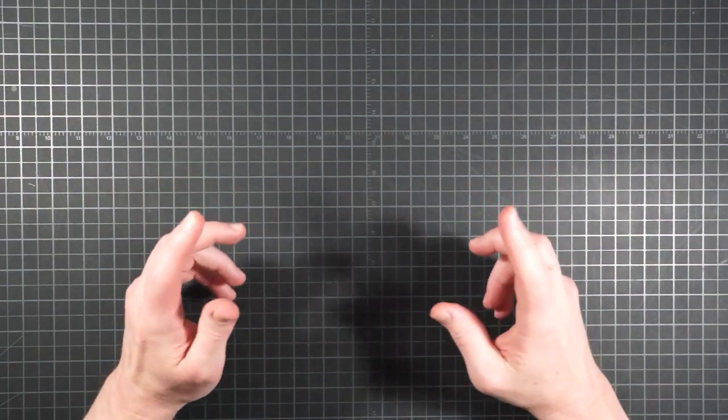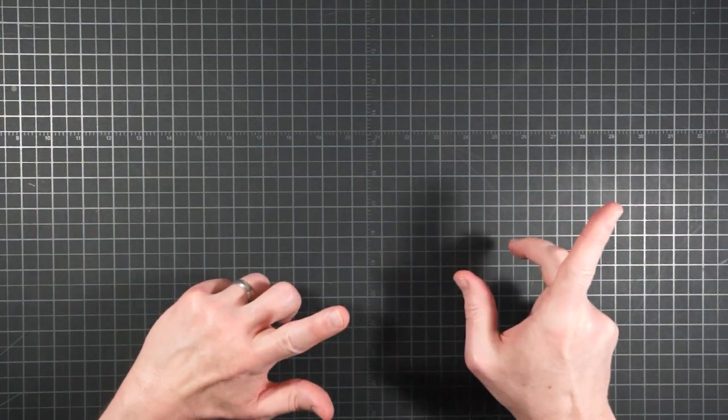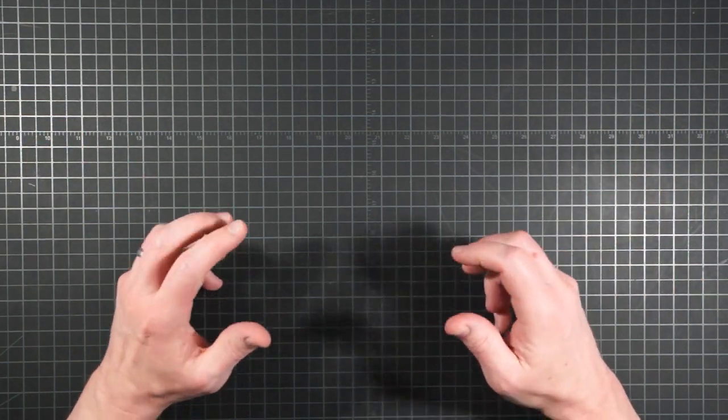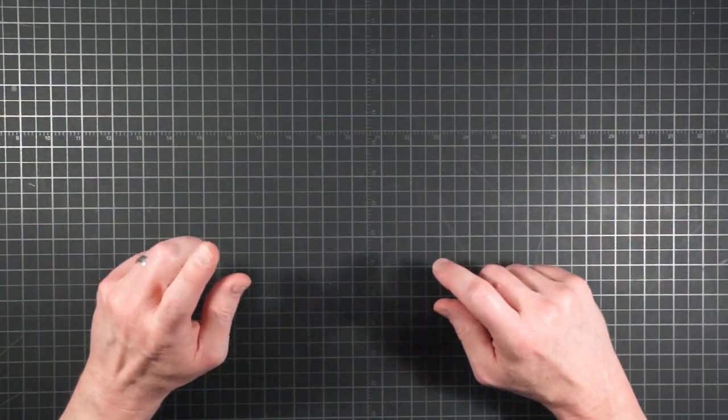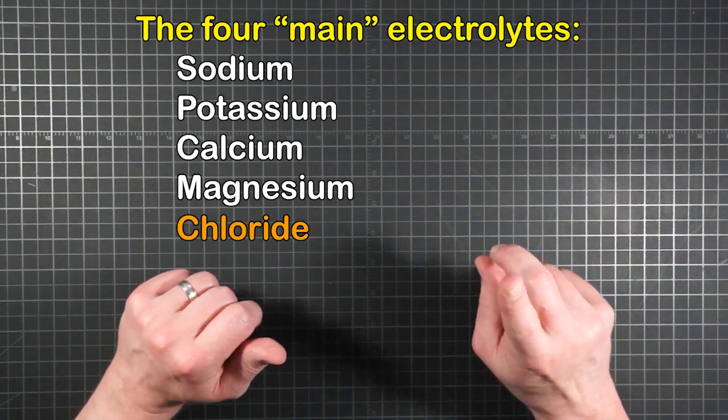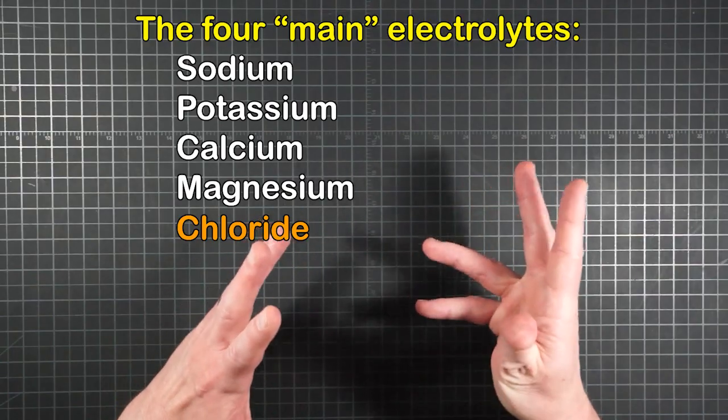All right, so all this talk about sodium chloride and potassium chloride brings up the question, what about that chloride? Everybody, myself included, talks about the four main electrolytes, sodium, potassium, calcium, and magnesium. But there is also chloride, a fifth element, so to speak.